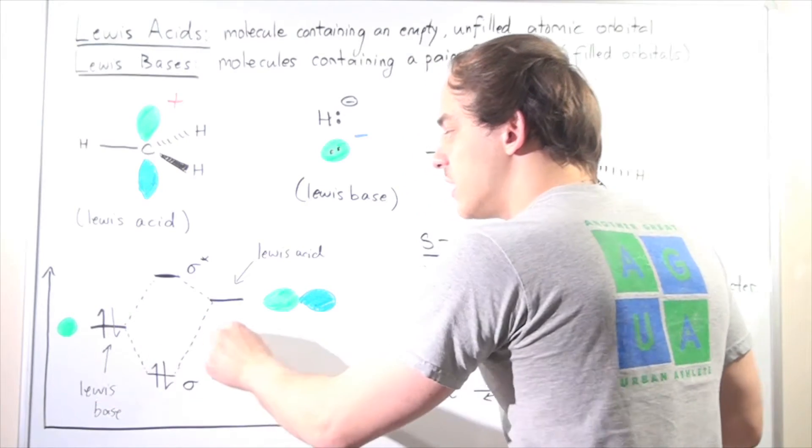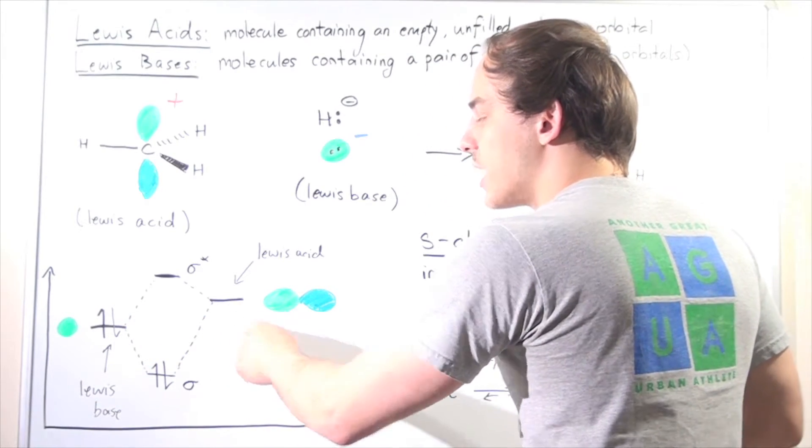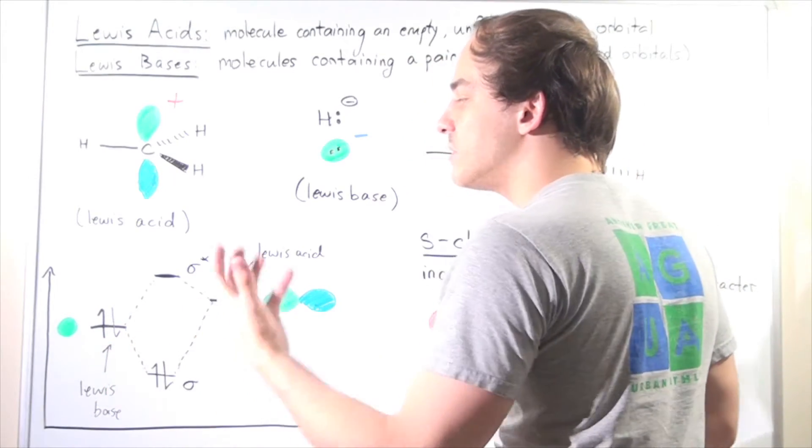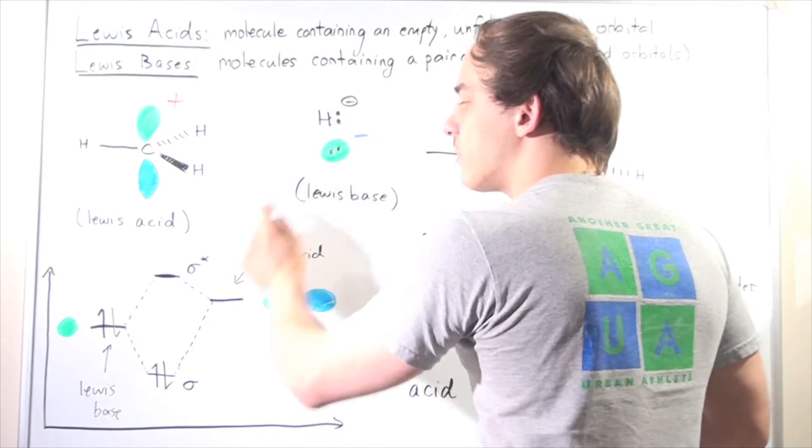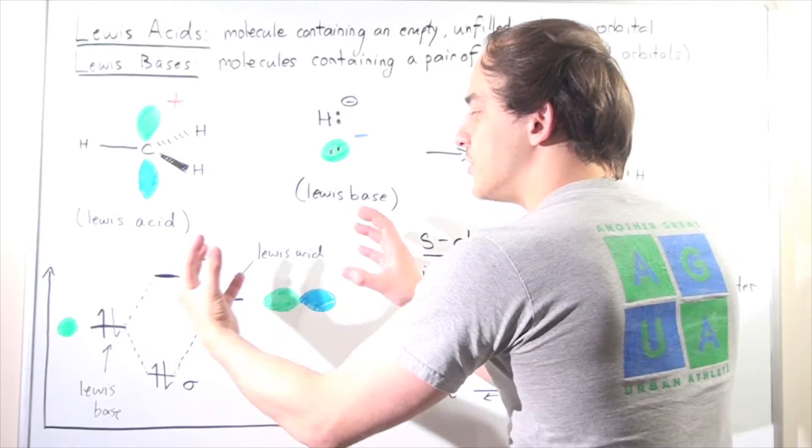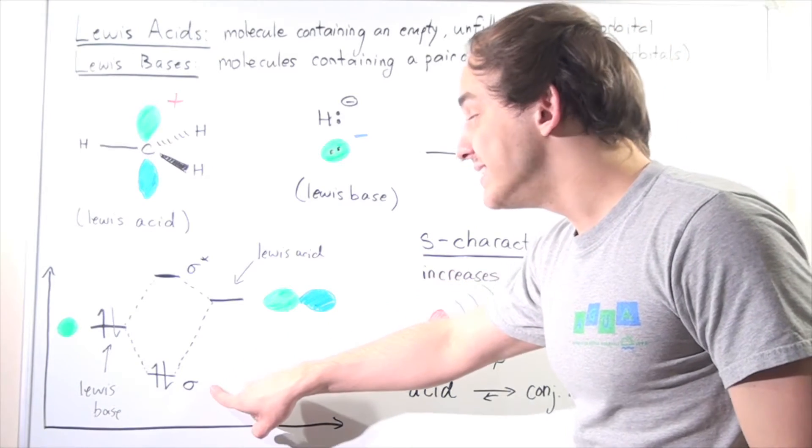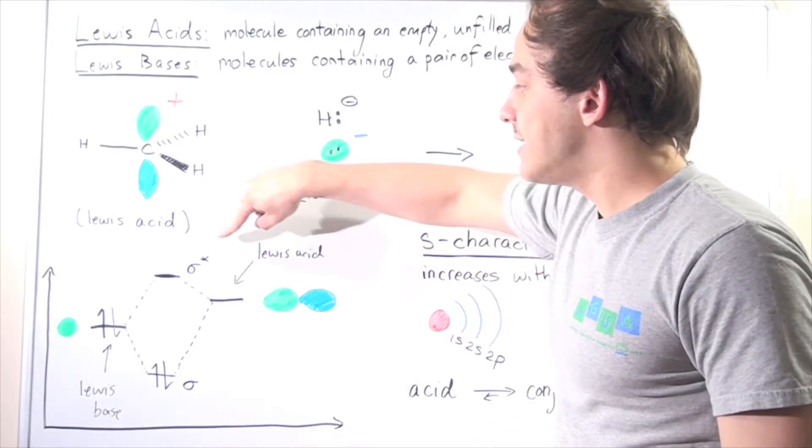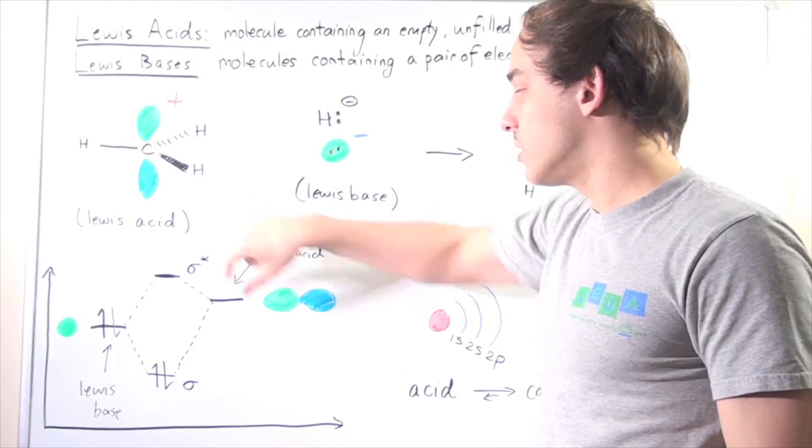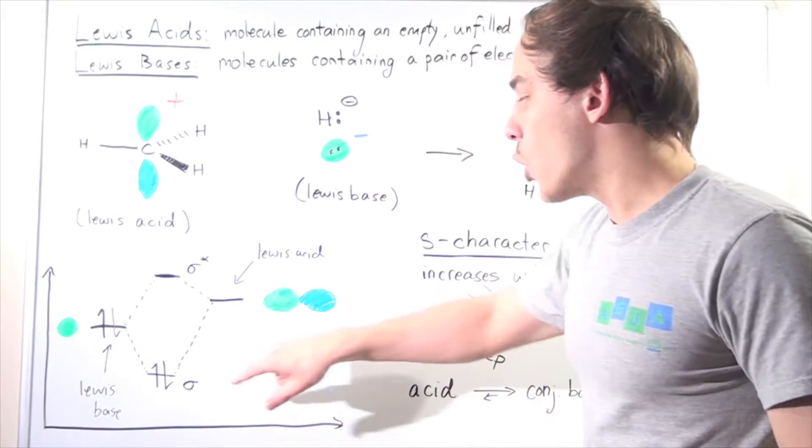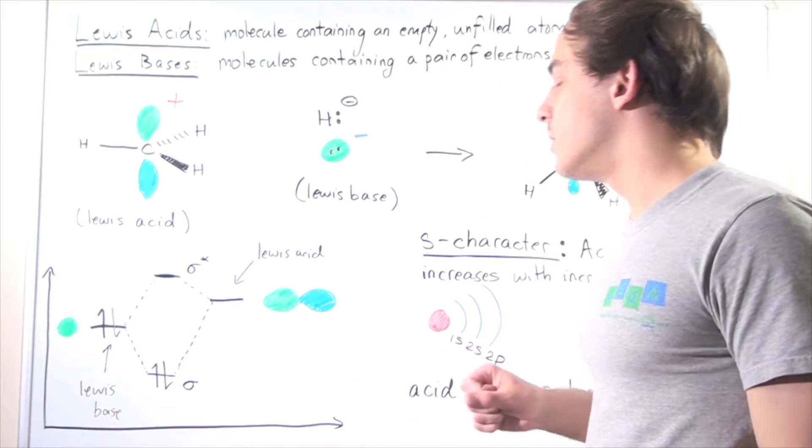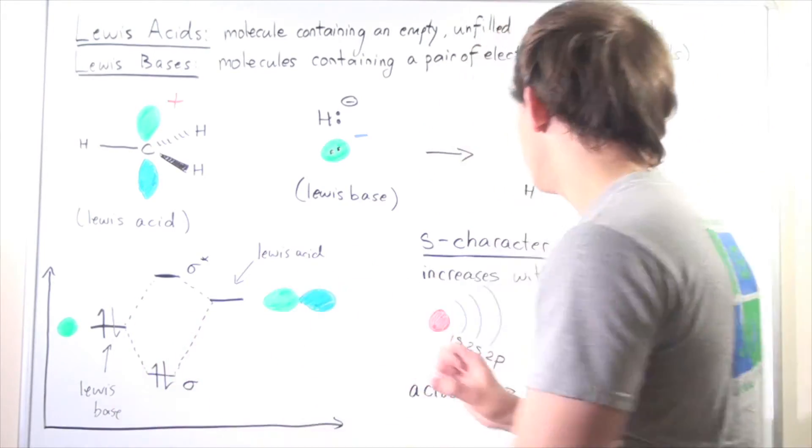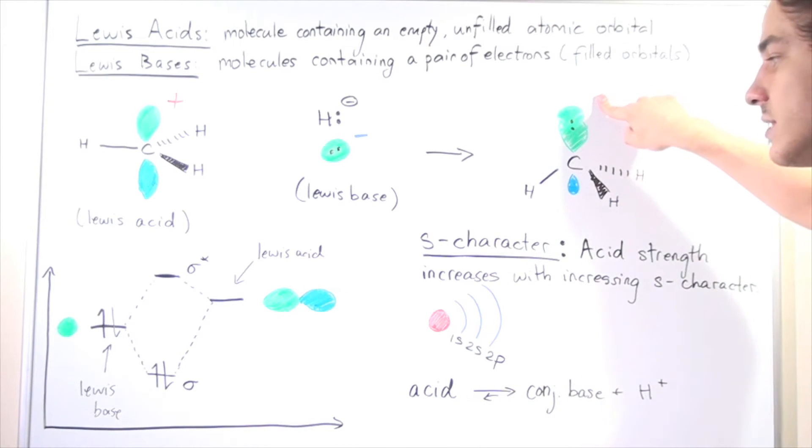This will be lower than our 2p orbital. The 2 electrons will come directly from the 1s, from the hydride, and when they interact, they will form a bonding molecular orbital and an anti-bonding molecular orbital. The 2 electrons will go into the bonding molecular orbital, forming our sp3 hybridized molecular orbitals.